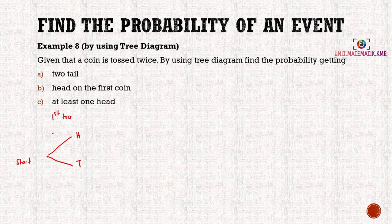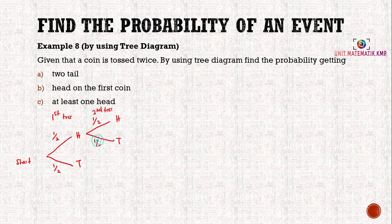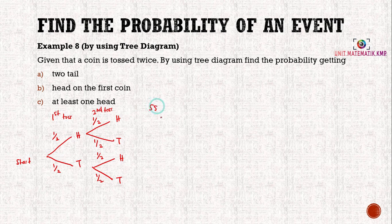For the first toss, the probability of getting head is one over two, and tail is also one over two. For the second toss from each branch, we can also get head or tail, so the probability is still one over two and one over two for both head and tail branches. We write the probabilities on the branches. The sample points are HH, HT, TH, and TT.